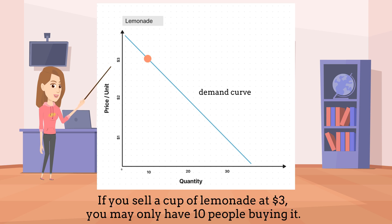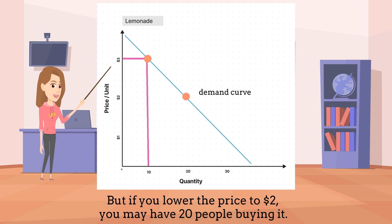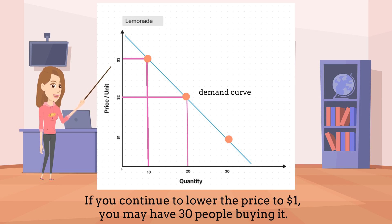If you sell a cup of lemonade at $3, you may only have 10 people buying it. But if you lower the price to $2, you may have 20 people buying it. If you continue to lower the price to $1, you may have 30 people buying it.